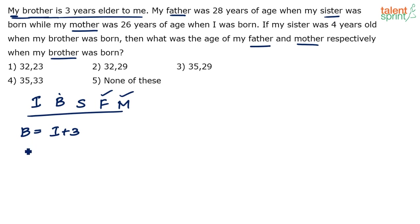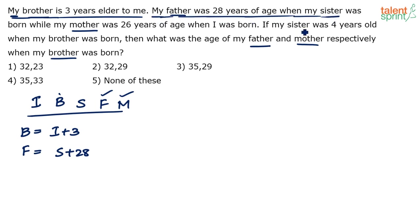My father was 28 years of age when my sister was born. So: father's age = sister's age + 28. This shows the father is 28 years older than the sister — when the sister was born, father was 28, so he is always 28 years more than the sister's age.